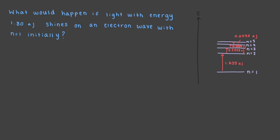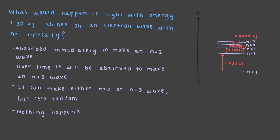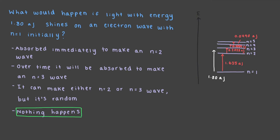What would happen if light with energy 1.80 attojoules shines on an electron wave with n equals 1 initially? Nothing happens. Since the light is not resonant with a change in the electron, it will not be absorbed — this light is transparent to the electron. This might seem weird because it looks like there is more than enough energy for an n equals 1 to n equals 2 transformation, but since there is no resonance, nothing happens. This is one of the big ideas that led to the realization that electrons must be behaving like waves.